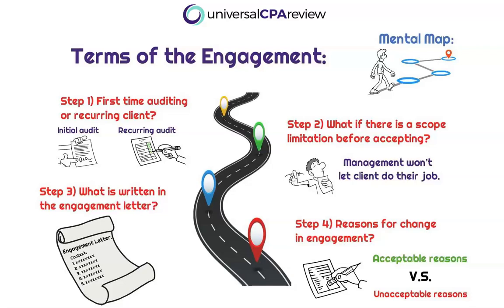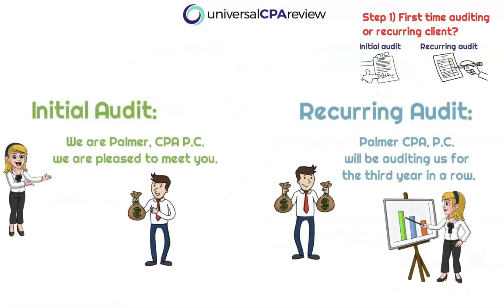The questions within our mental map when thinking about the engagement letter consist of: Is this a first-time audit or a recurring audit? What if there's a scope limitation before accepting the engagement? What is actually written in the engagement letter? And what are the reasons for changes in the engagement? Starting with whether this is an initial or recurring audit engagement.